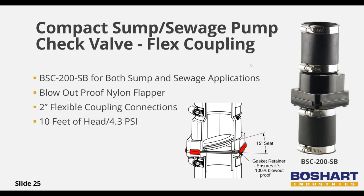We have one compact ABS sump pump check valve that can be used in both sump and low-pressure sewage applications. Our BSC 200 SB model is our only 2-inch ABS check valve — it can handle larger size pumps and meets the 2-inch size required for sewage applications, as long as they are low pressure. A gasket pocket in the body design ensures perfect gasket alignment and a 100% blow-off proof flapper gasket.